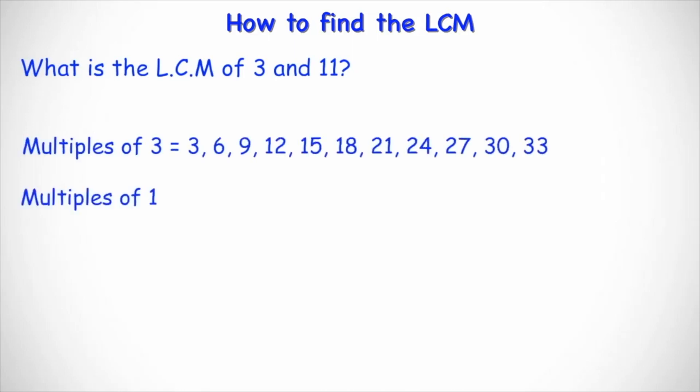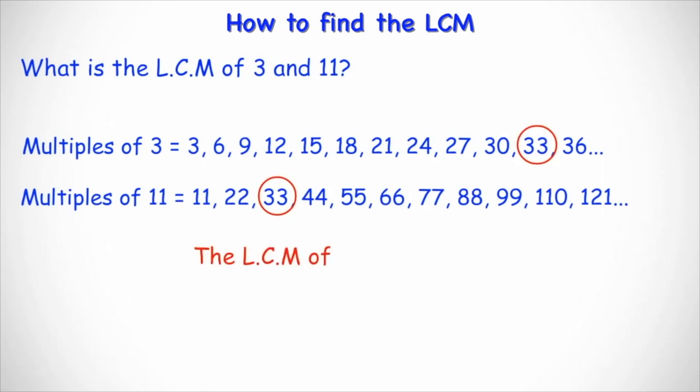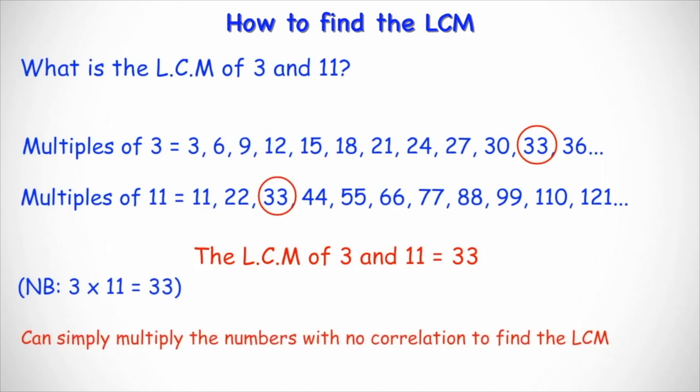So if we list all the multiples of three and we list all the multiples of 11, we can see that the first number, the smallest number that is common to both lists is 33. But also notice that three times 11 is 33 as well. So just realize that when the numbers don't have any correlation and they're completely different, to find the LCM we can just simply multiply them.